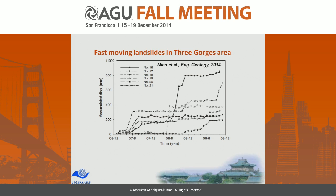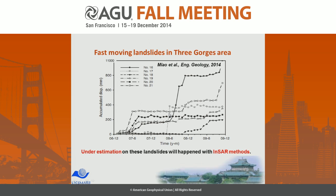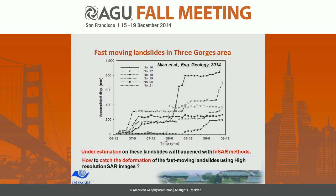According to a report from a journal paper written by Professor Mill, during 2008–2009 there was a faster movement of more than 1 meter per year. So there should be an underestimation in our InSAR result. The key question is how to capture the faster movement using high-resolution radar imagery.